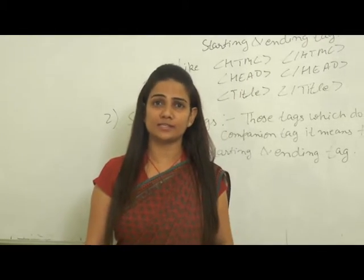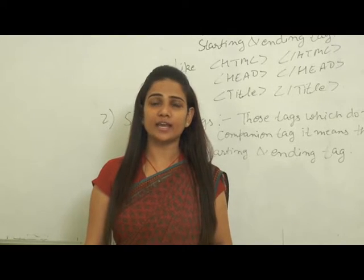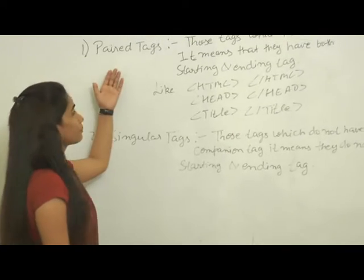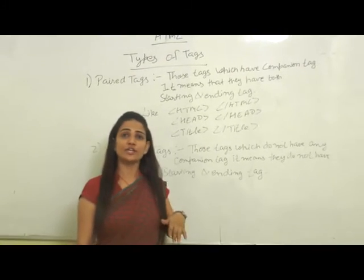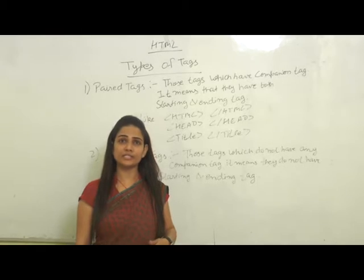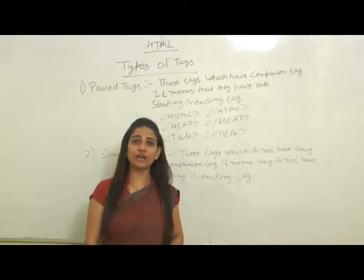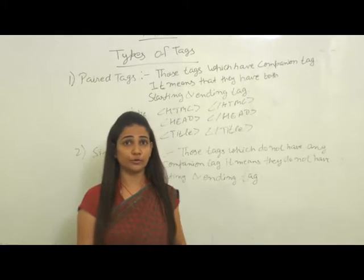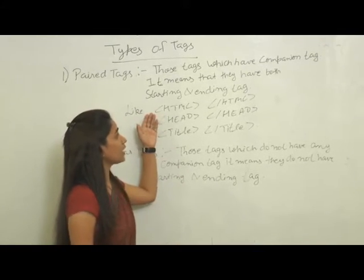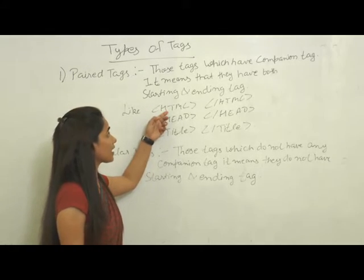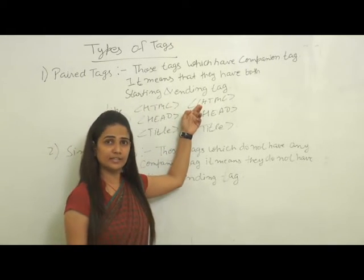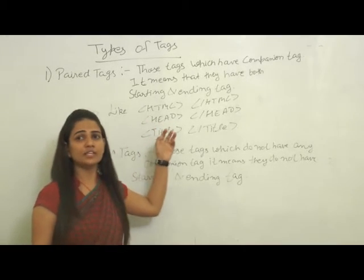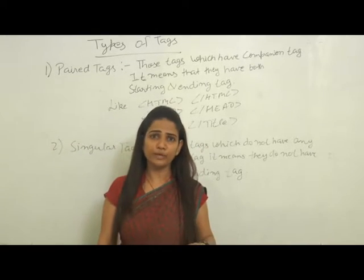HTML contains many kinds of tags, and those tags are categorized in two main parts. First is pair tags. Pair tags are those tags which have their companion tags — they have one starting tag as well as an ending tag. For example, we have the HTML tag: this is the starting tag and this is the ending tag. Head tag and title tag are some basic pair tags.